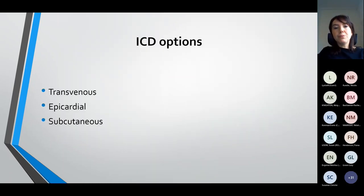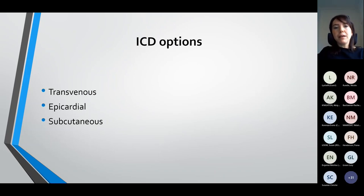We now have a large cohort of paediatric patients with ICDs. We have three main options including transvenous, epicardial, and subcutaneous. We try to go with subcutaneous ICD if possible but this is limited by weight and size, so some patients end up with transvenous systems. Epicardial tends to be reserved for the very young and small patients.